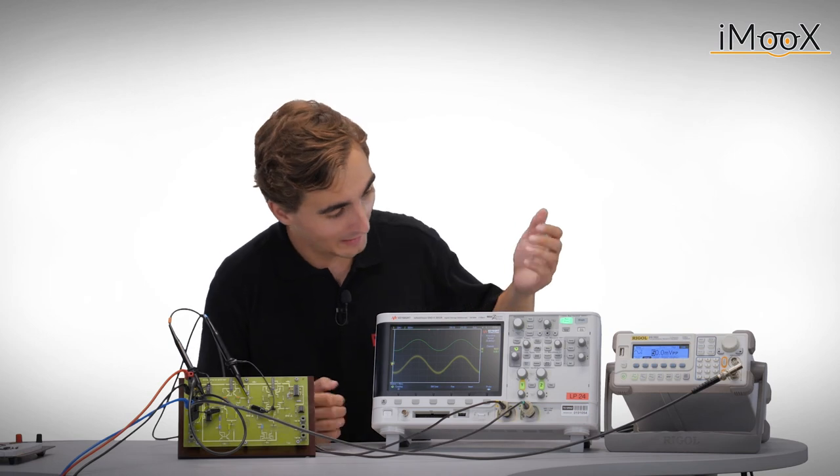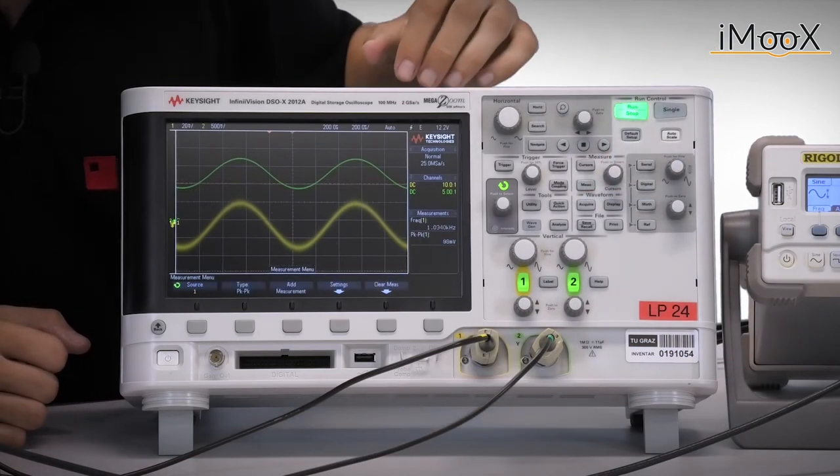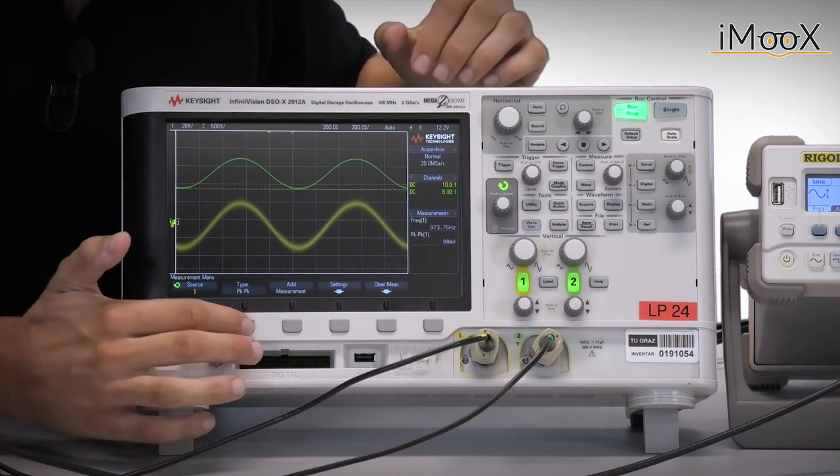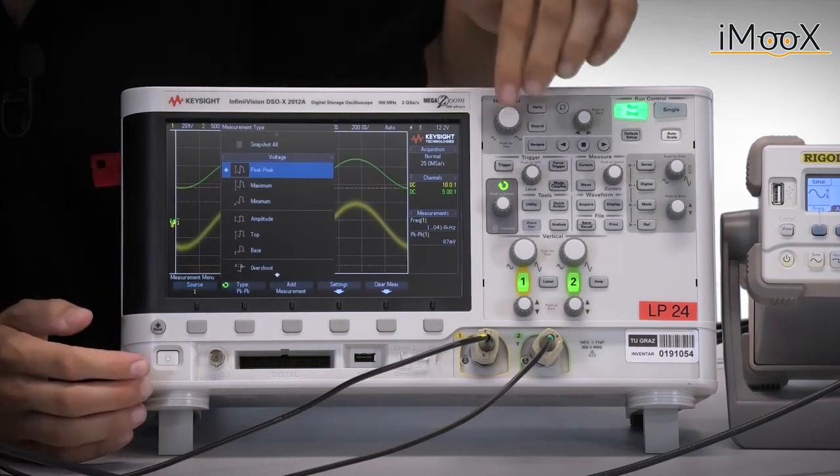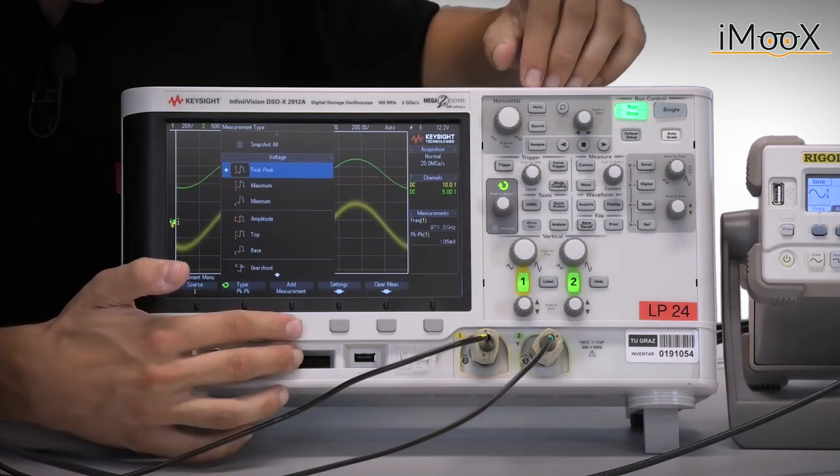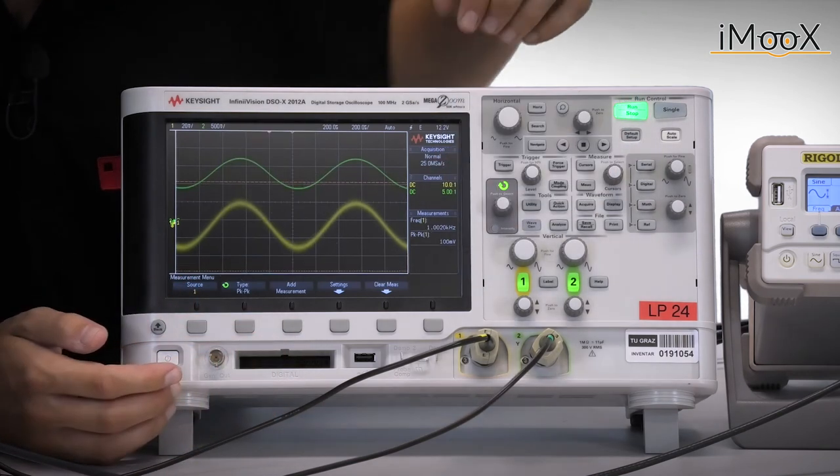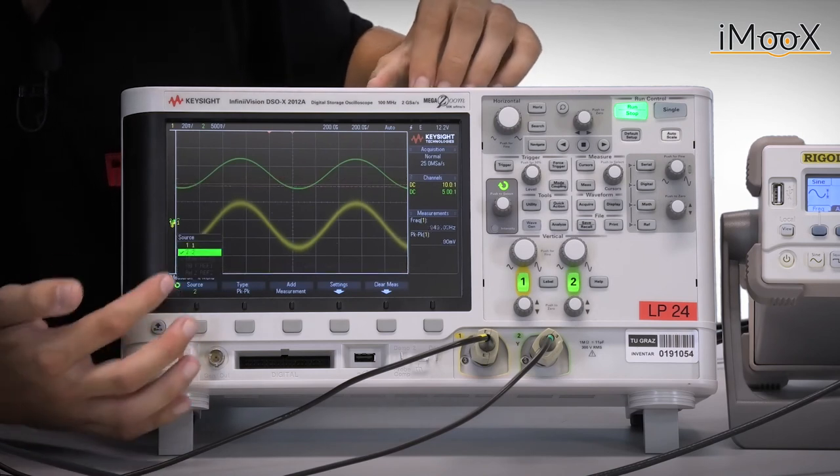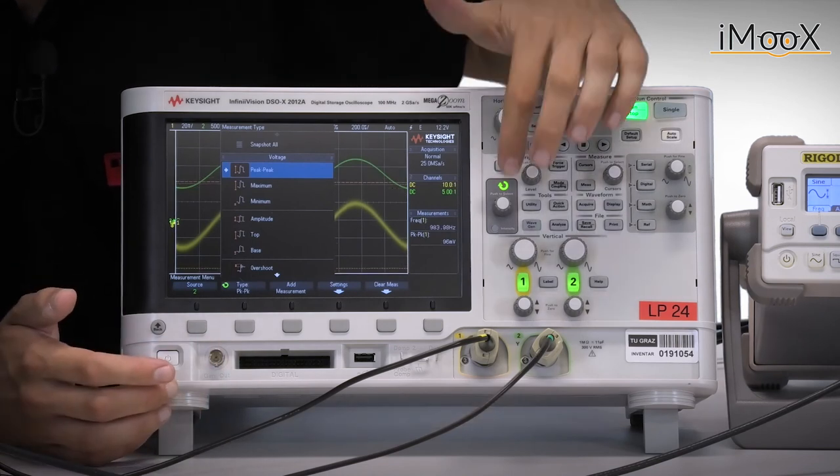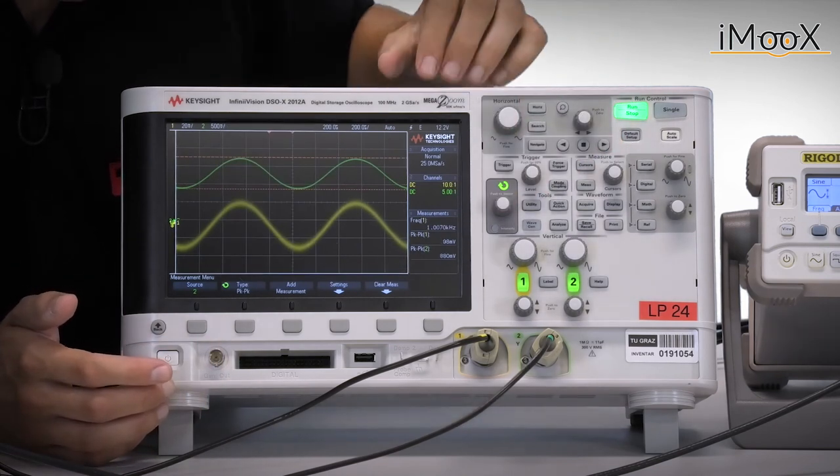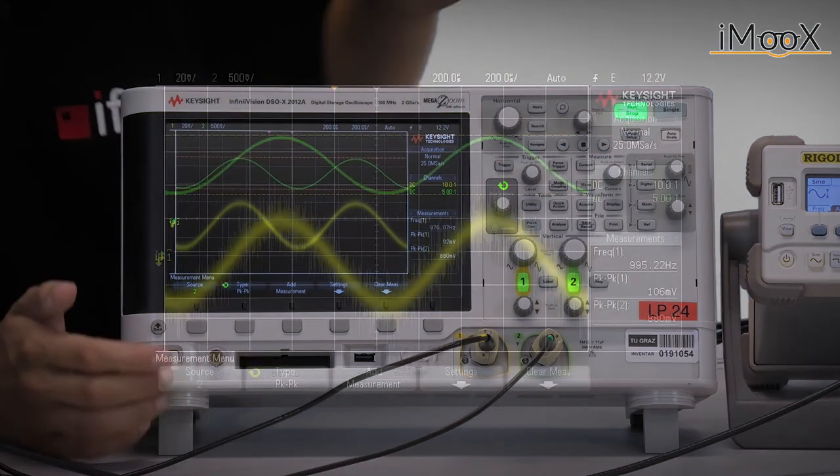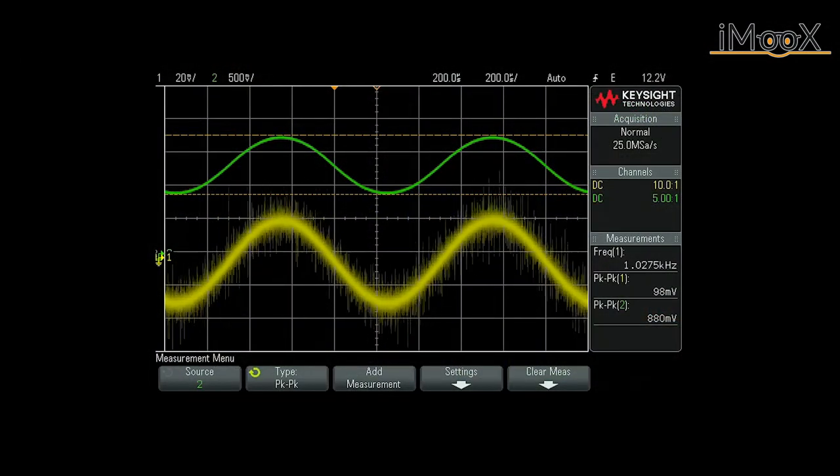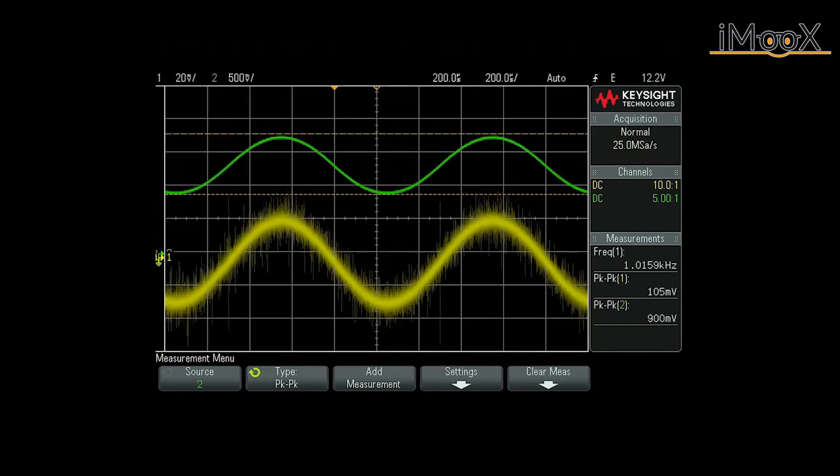In order to add the measurements, we can go to the Measure menu, select the first channel, select our type of measurement, which is peak to peak, and we can add the measurement to the side panel. In the same way, we can also do it for the second channel, again selecting the measurement and adding it. And now, as we have both the peak to peak voltages of the input and the output, we can calculate our differential gain.